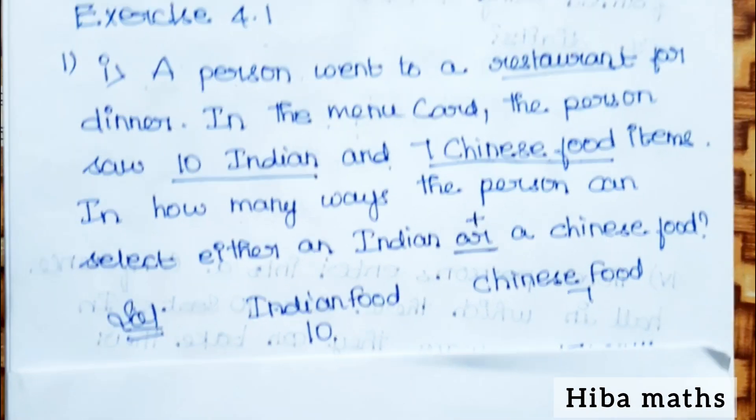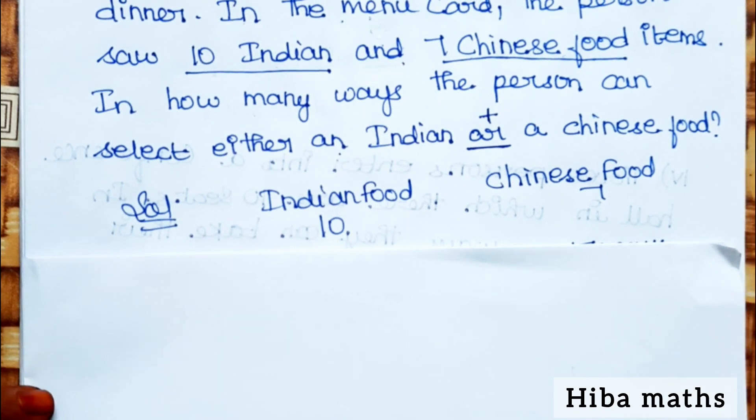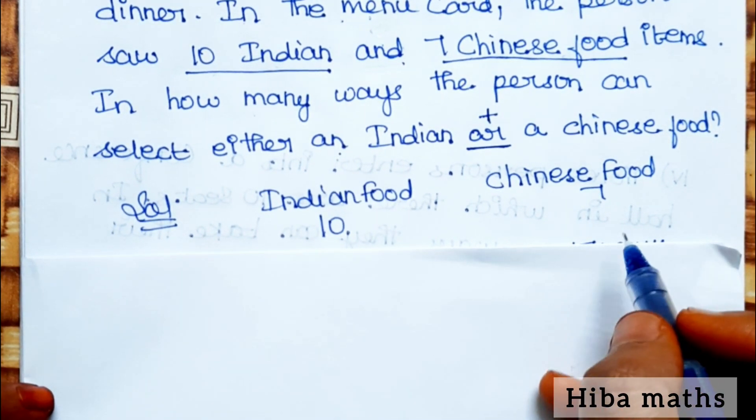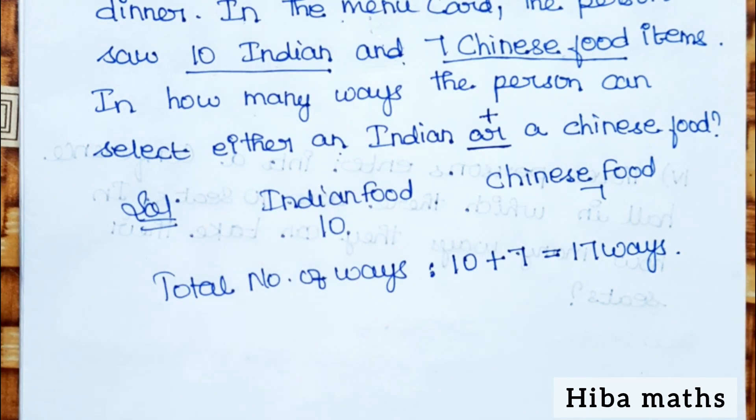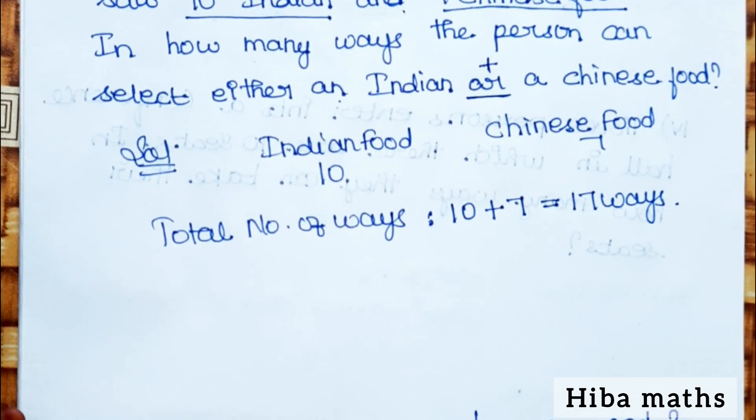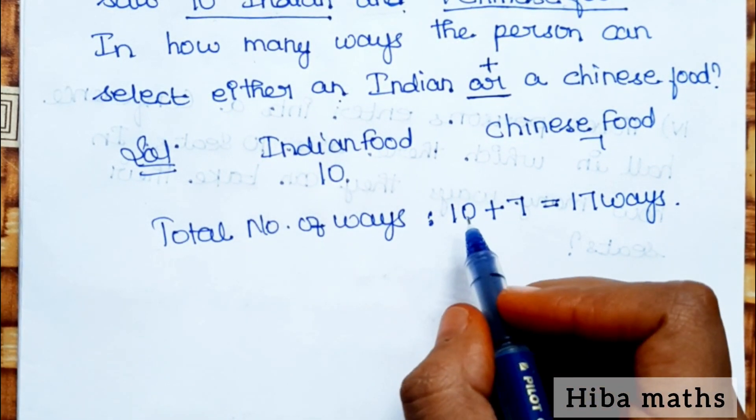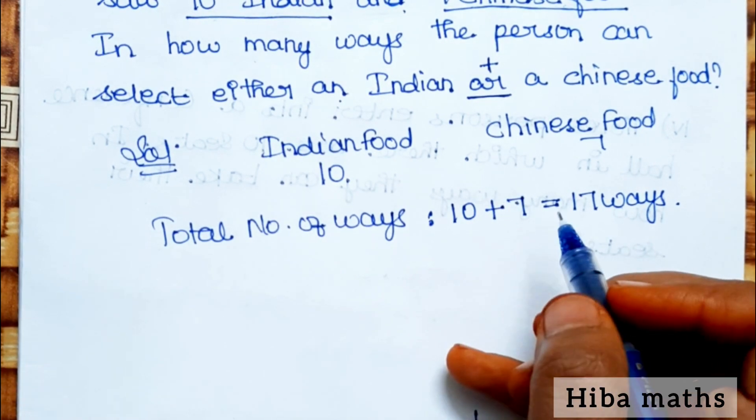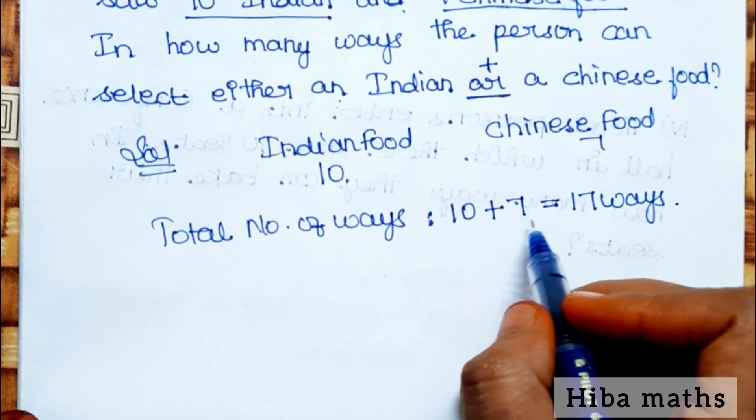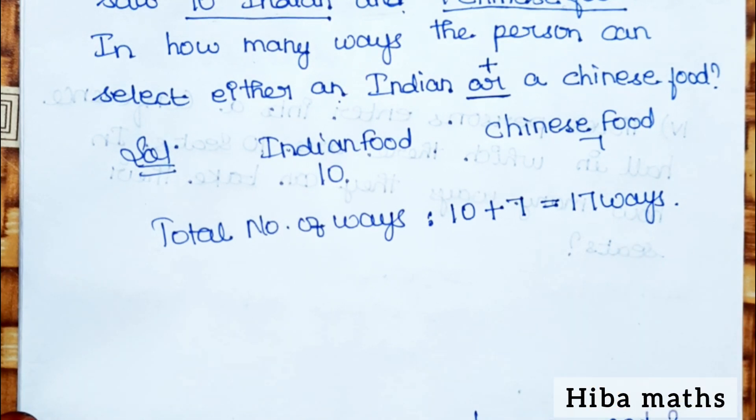Total number of ways is 10 plus 7. For or, we use plus, and for and, we use multiplication. So 10 plus 7, the total is 17 ways. In 17 ways, you can choose one Indian or one Chinese food item.